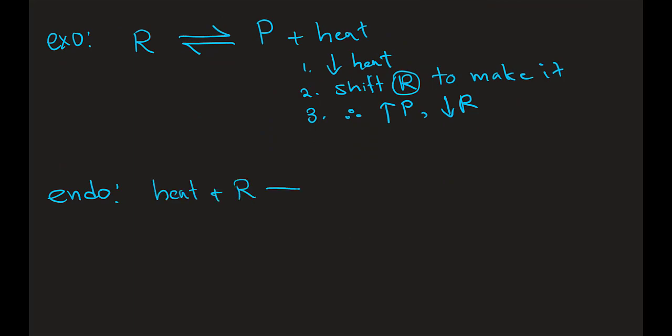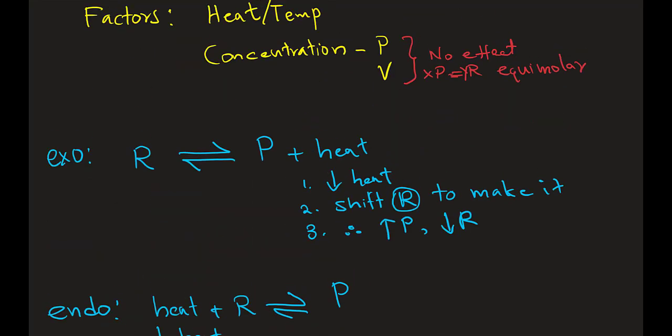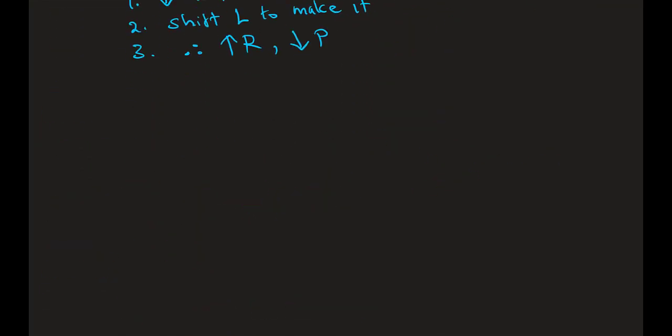Let's take an endothermic: heat plus reactants goes into products. Now, if we take the heat out, the reaction should shift to the left to make the missing heat. So therefore, as a result, reactants are increased, products are lowered.